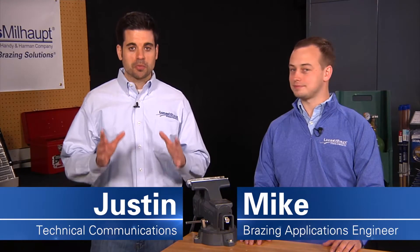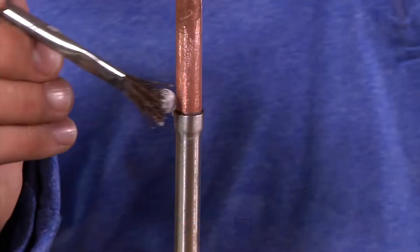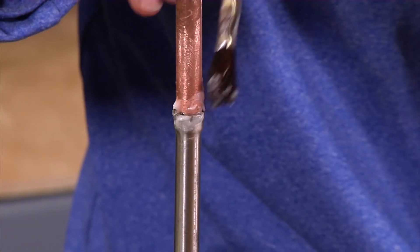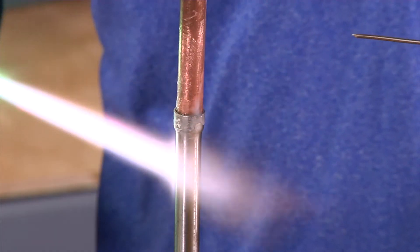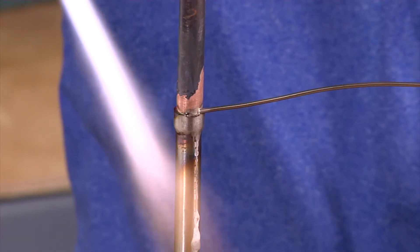If you're braising metals, flux is an important part of the process. Flux is a chemical compound applied to joint surfaces before braising. It's vital because it protects joint surfaces from oxides that form during heating. As the flux melts and becomes active, it absorbs oxides and helps the braising alloy flow.